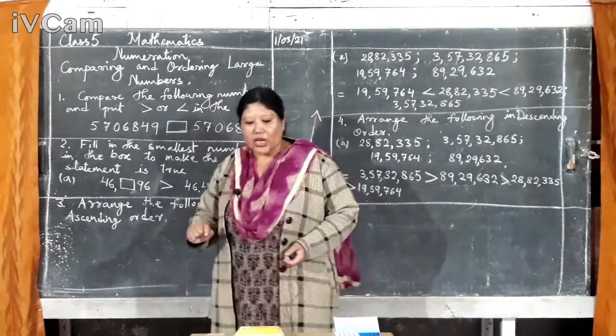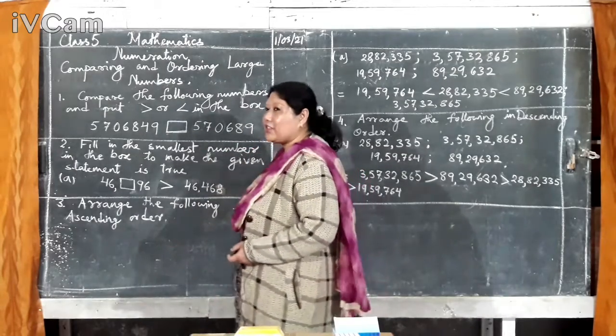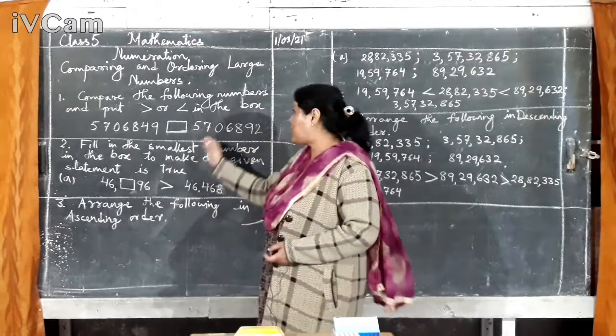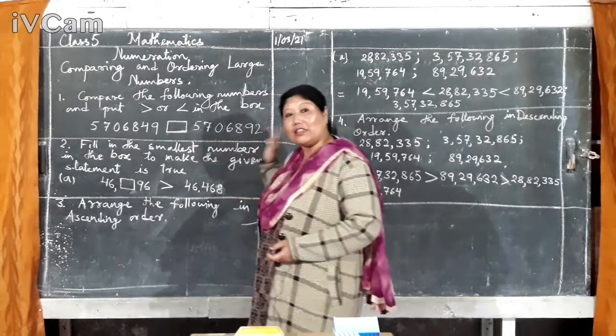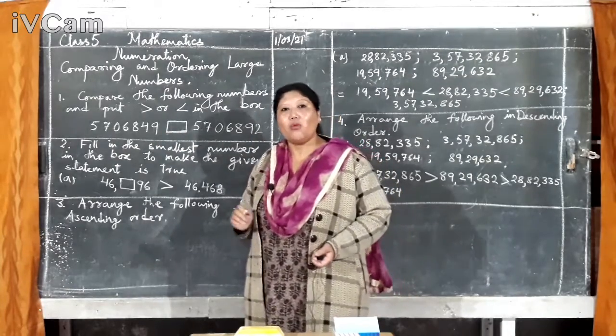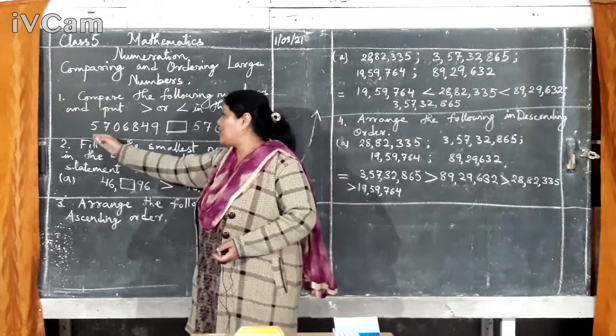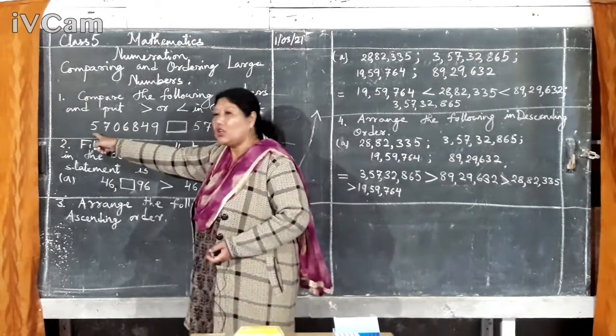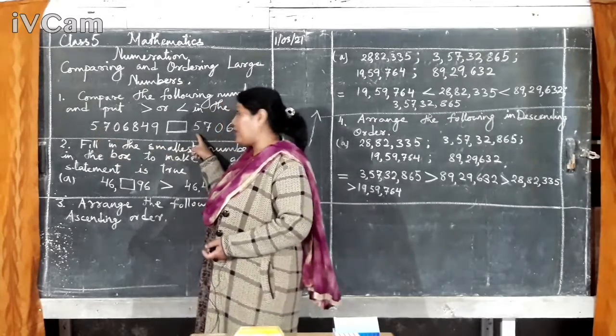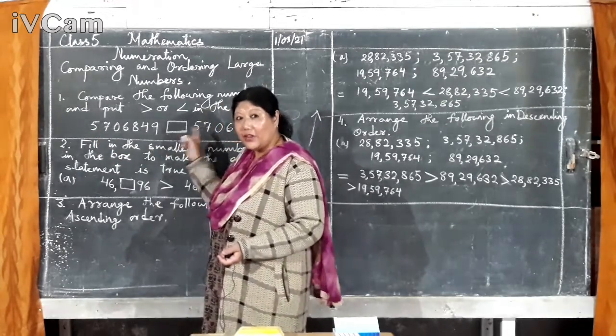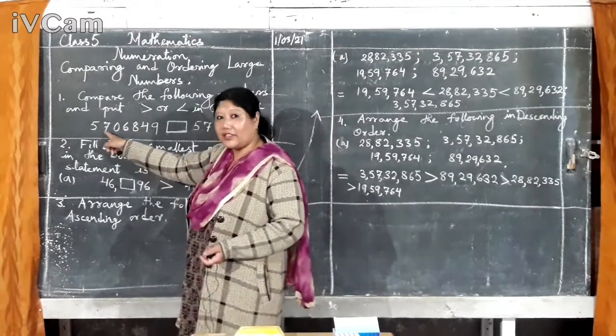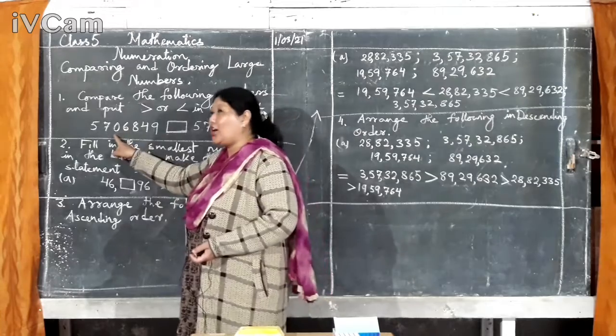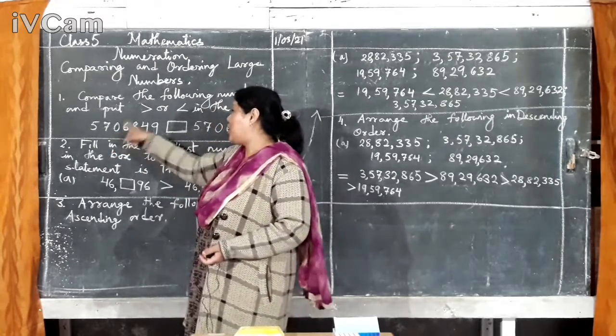But, suppose, if you have 7 digits, okay? I will write 2 here. Now, it became 7 digits. This side also 7, this side also 7 digits. Now, what to do? So, again, what you are going to do? Start from 1st digit, 1st digit. Compare it to that digit.